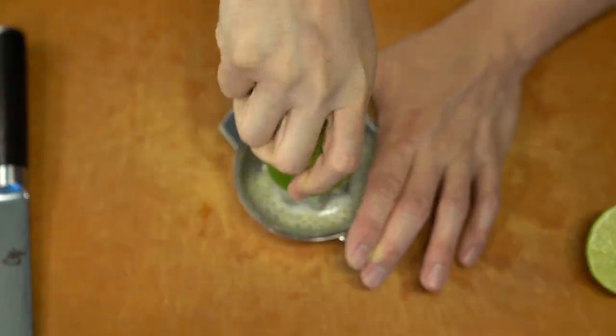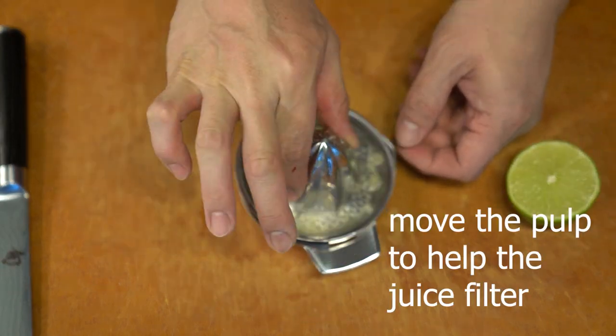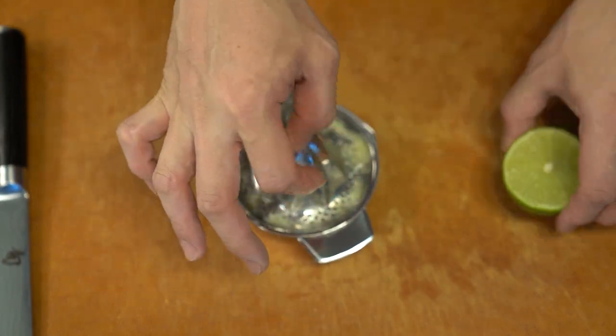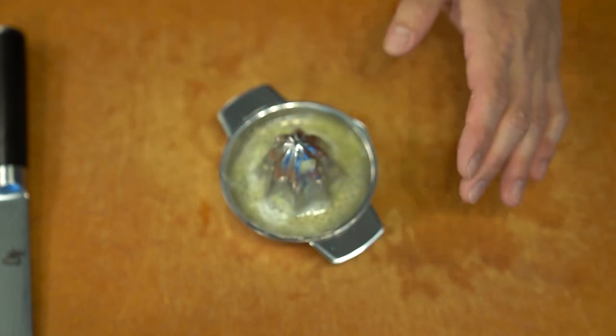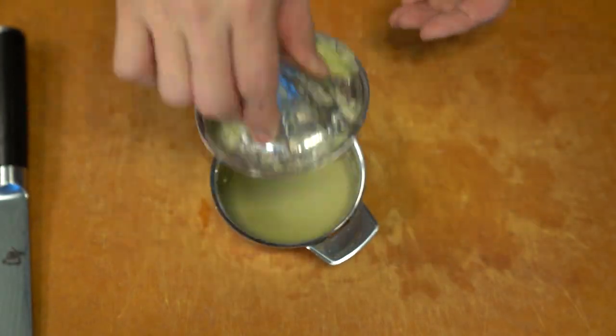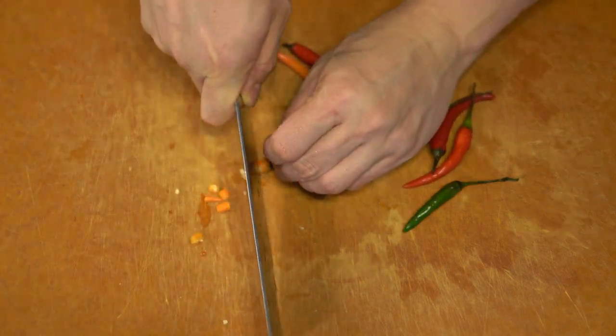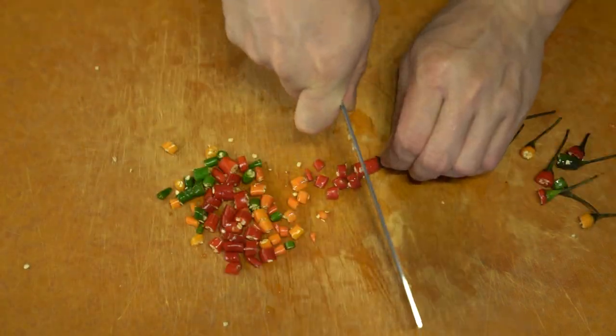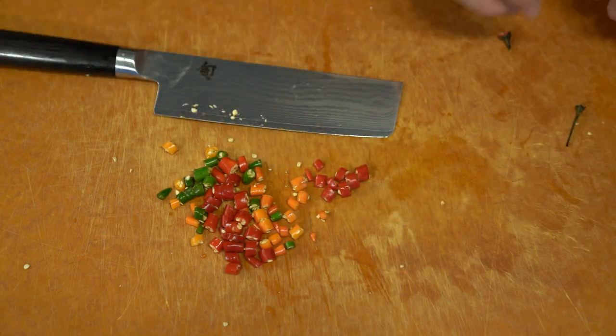For Thailand, a sauce that I like that's very versatile to use is Prig Nam Plak. I believe this sauce is very similar to another Vietnamese sauce called Lok Nang because they share similarities in using lime juice, fish sauce, and sugar.